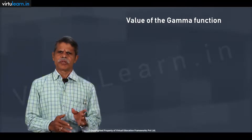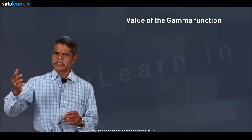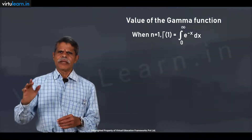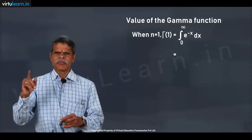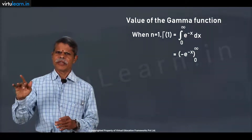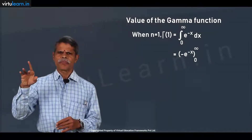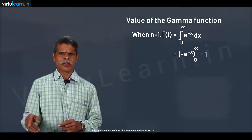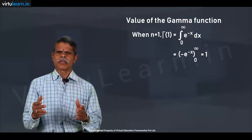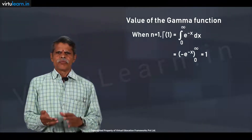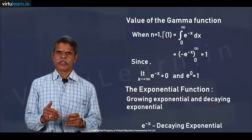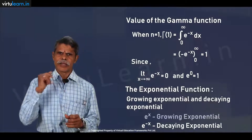Let us see what Gamma(1) is. When we substitute n = 1, we get the integral from zero to infinity of e^(−x) dx. On integration it becomes minus e^(−x), evaluated at zero and infinity. As x tends to infinity, e^(−x) tends to zero; at x = 0, the value is one. Therefore, Gamma(1) = 1.